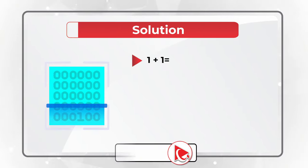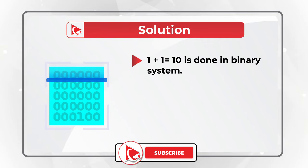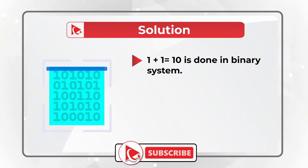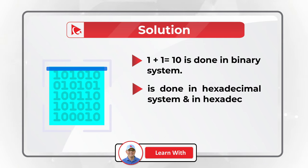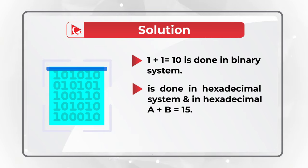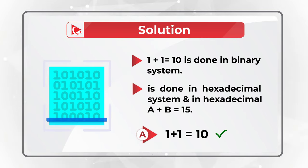The trick here is that the first expression is done in a binary system, and in binary 1 plus 1 equals 10. The second expression is done in a hexadecimal system, and in hexadecimal A plus B equals 15, not 17. So the correct answer is choice A: 1 plus 1 equals 10.